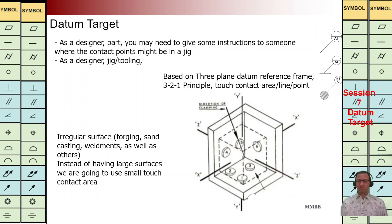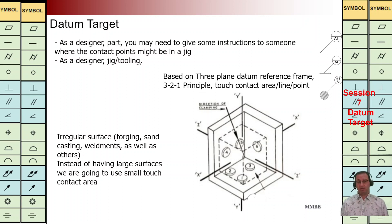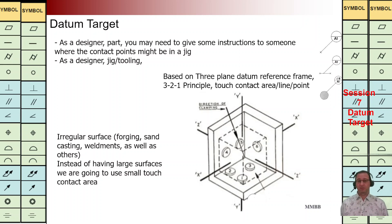Also, in cases where the surface is irregular based on the method of fabrication — we may use forging, sand casting, weldment, and so on — the surface may not be regular. It is irregular, and it is difficult to define a reference plane for that irregular surface. In this situation we again need to use the datum target concept. As a designer, sometimes we need to give instructions to highlight where the contact points might be in a jig, and again in this scenario we need to use this concept.